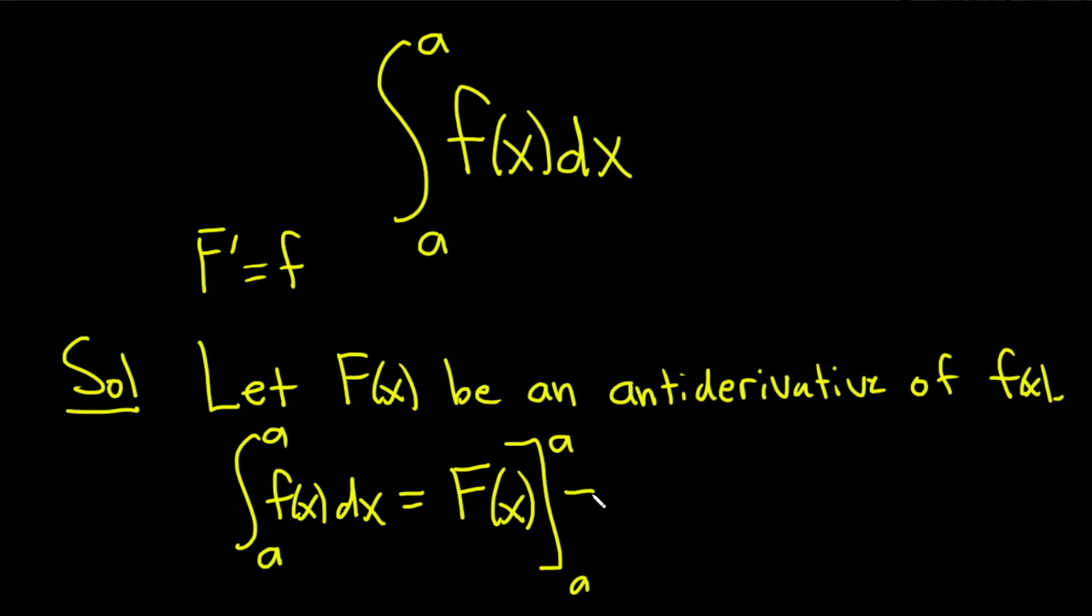Then you plug in a. We get F(a) minus, the formula says subtract, then plug in a again. So F(a) - F(a) equals zero.